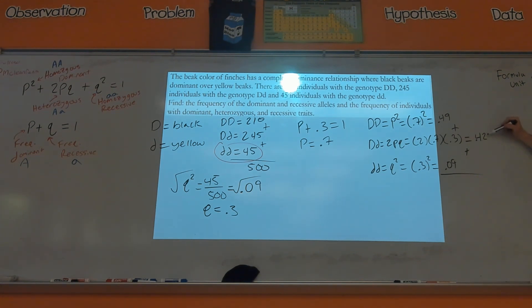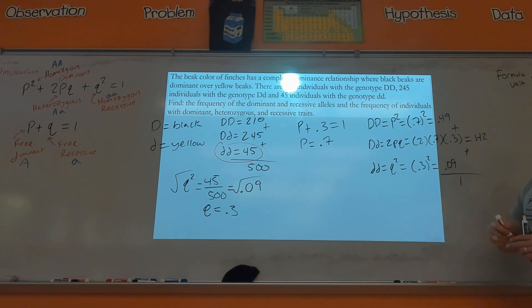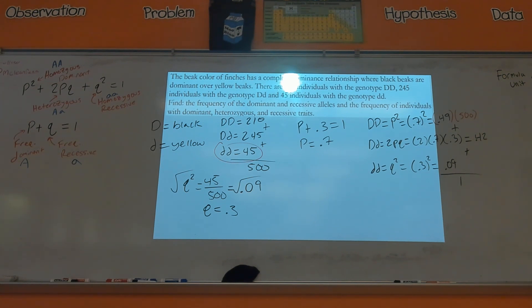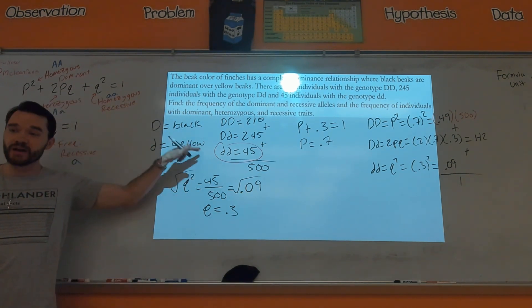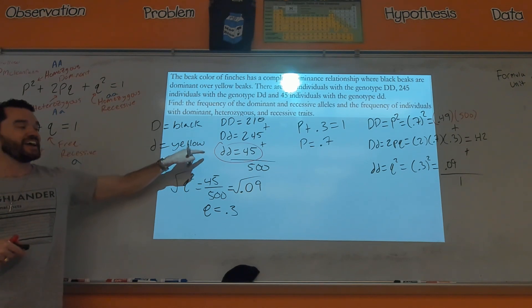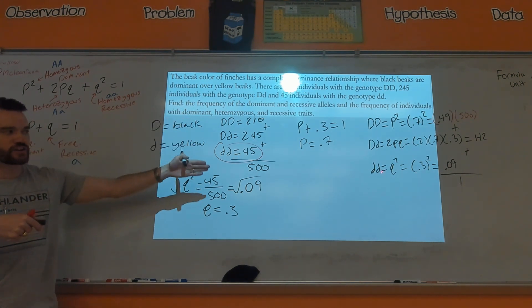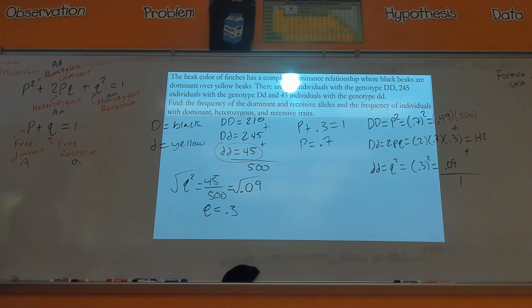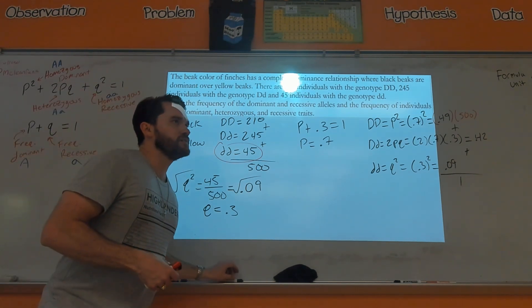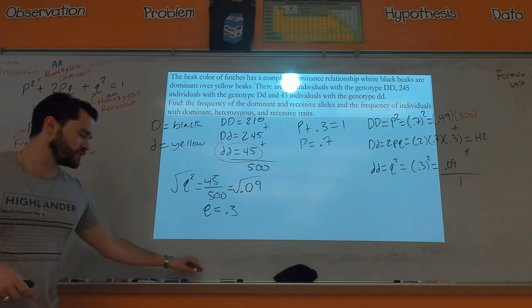To find the number of individuals per genotype, multiply each frequency by the total population of 500. Do the same for each genotype — heterozygous and homozygous recessive as well. The hinge point for solving all these problems is to start with the homozygous recessive — that's your entry point. Once you get q², you find q, then p, and then use the second equation to find everything else.